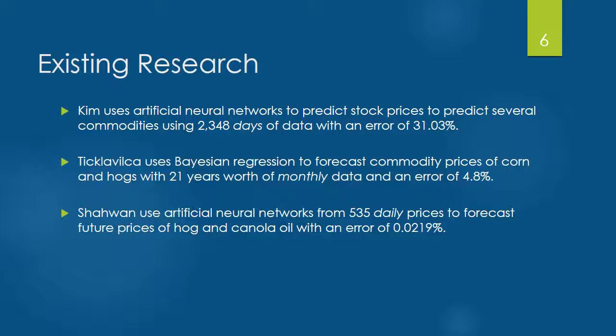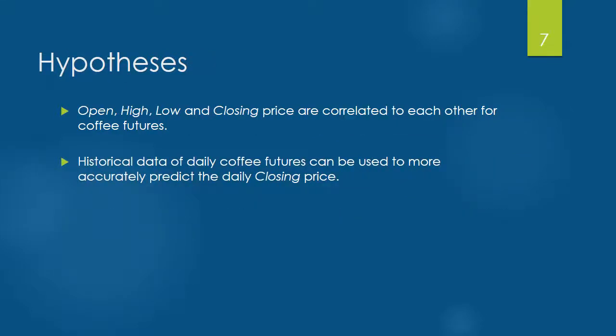Shawan uses neural networks to predict hog and canola prices with an error of 0.0219%. Now that I have discussed existing research, I wanted to state my hypotheses.